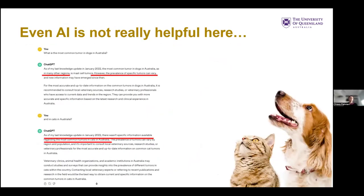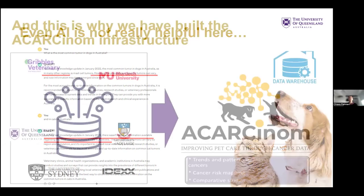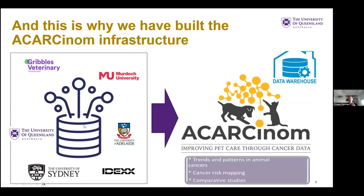Now that we are in the AI era, I've tried to interrogate ChatGPT, and it's not helpful either. If you ask AI what the most common tumor in dogs and cats in Australia is, you don't get very far. So this is where A-carcinome came in.